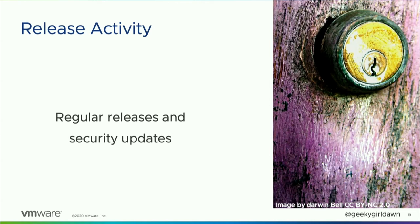Regular releases provide peace of mind for users that they'll be able to get new features, bug fixes, and security updates in a timely manner. A regular release cadence also helps contributors know when they can expect their contributions to be included in a release. From a project health standpoint, I look at whether an open source project makes regular releases and quickly patches security vulnerabilities. Projects that take a proactive approach to addressing security issues and releasing bug fixes are more likely to be secure and healthy.